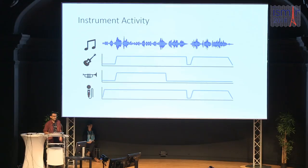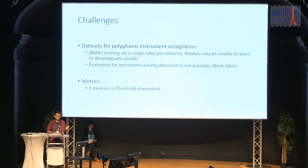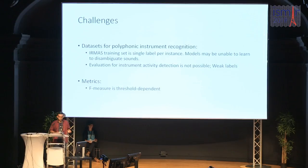Some challenges in instrument activity detection: the IRMAS dataset is popular but usually has a single instrument tag per instance, making disambiguation difficult. Evaluation is not possible because instances are weakly labeled. F-measure is popular but threshold-dependent, so we discuss alternative metrics. To solve the dataset issue, we use multi-track datasets where annotations can be automatically obtained using stems — a combination of MedleyDB and the Mixing Secrets dataset.